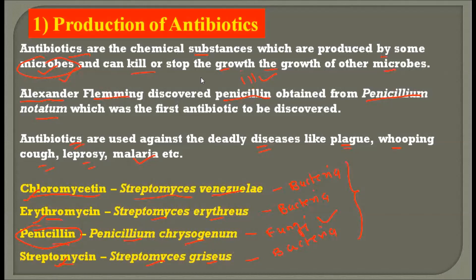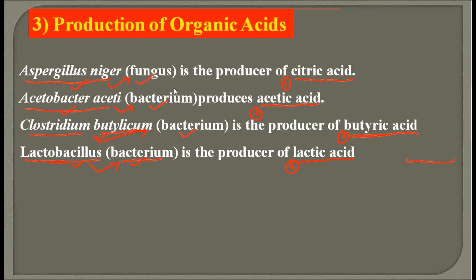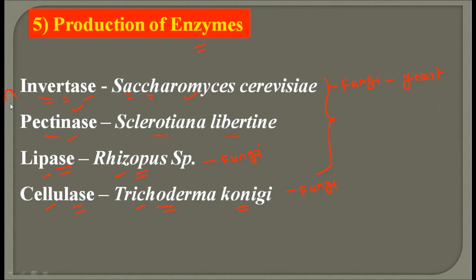In summary, we have seen the application of microbes in the production of antibiotics — the four antibiotics being chloromycetin, erythromycin, penicillin and streptomycin. Then we saw the production of alcoholic beverages: wine, beer and whiskey produced by Saccharomyces species. Then organic acid production — the four organic acids being citric acid, acetic acid, butyric acid and lactic acid and the organisms producing them. Then we saw the production of vitamins B2, B12 and vitamin C by different fungi and bacteria. Finally, the production of four enzymes — invertase, pectinase, lipase and cellulase — produced by fungi.